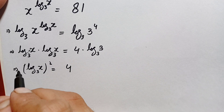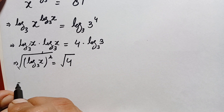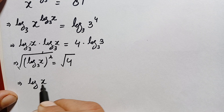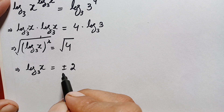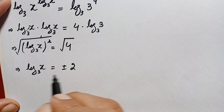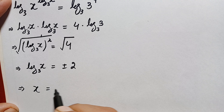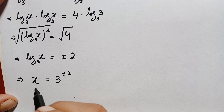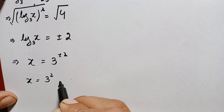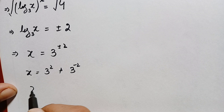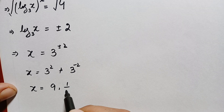To find x, we take the square root on both sides. The value of log of x with base 3 becomes plus or minus 2. Changing this into exponential form — a raised to power b equals x — we get x equals 3 raised to power plus or minus 2. So the two possible values are x equals 3 squared, which is 9, and x equals 3 to the power negative 2, which is 1 over 9.